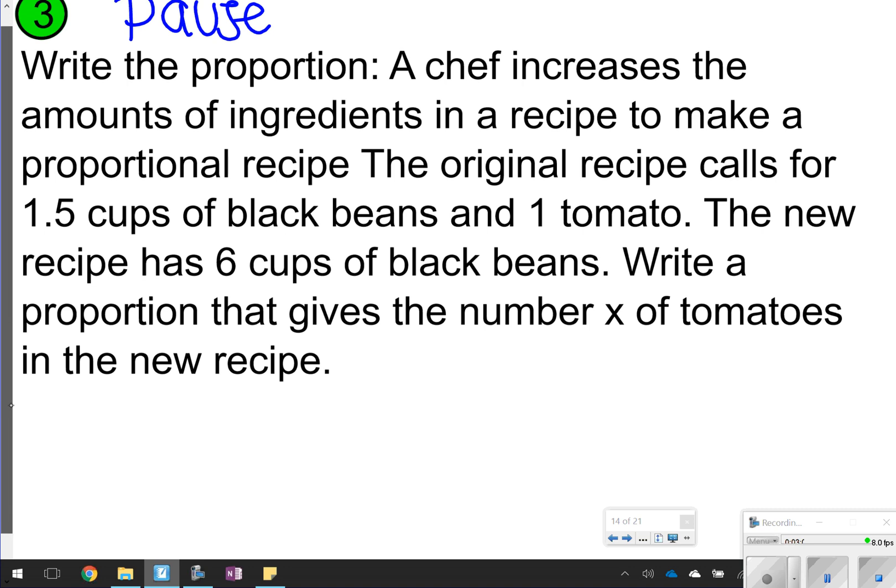So this one says a chef increases the amounts of ingredients of a recipe to make the proportional recipe. The original recipe calls for 1.5 cups of black beans and one tomato. So again, I always start with the original ratio. 1.5 cups of black beans. I'm going to say BB for black beans. And one tomato. I'm going to say one tom.